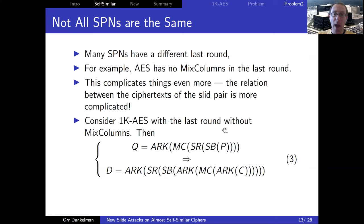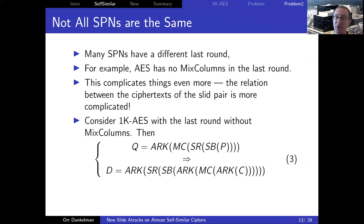These two problems relate strongly to the fact that the last round behaves differently, and this is why we need other techniques to generate more slide pairs out of a single slide pair. The key technique — used in three of the four attacks — is finding new methods of transforming a single slide pair into many slide pairs.